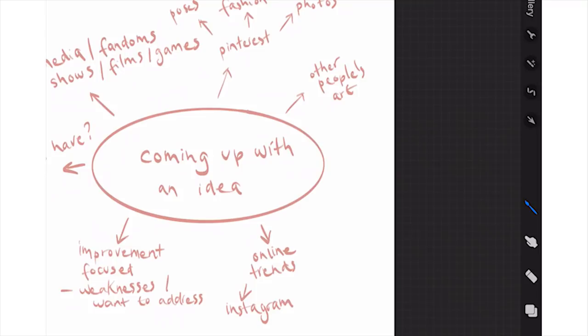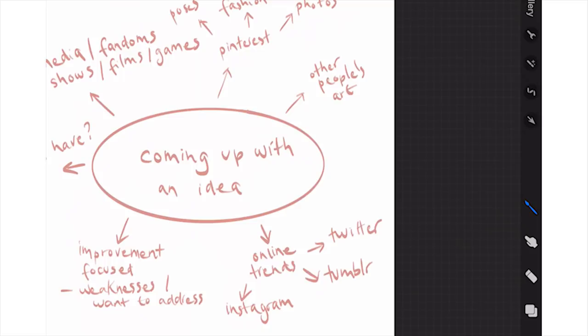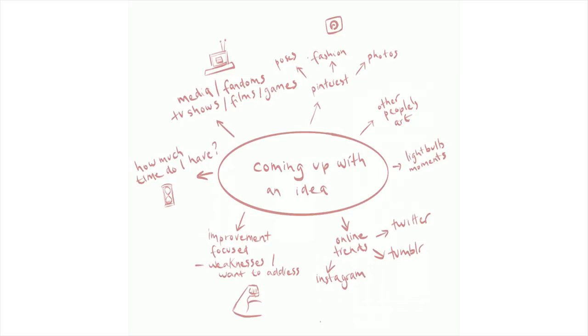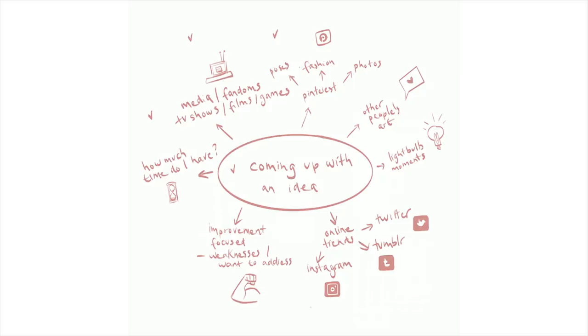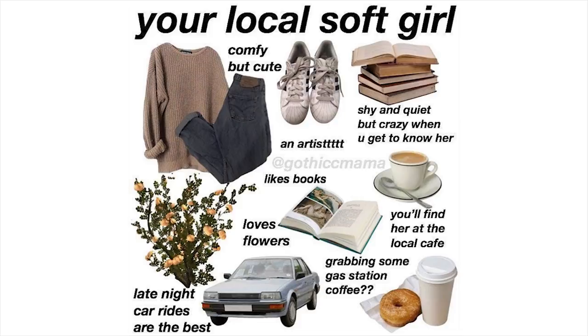Six is trends — often on Instagram and Twitter there'll be art trends going around, for example the 'draw this in your style' challenge or the 'meet the artist' meme. My favorite one is the Gym Sona meme, where everyone drew themselves as Pokémon Gym Leaders. Seven is light bulb moments — these are the rare occasions where I'll just be doing something random and all of a sudden my mind will come up with an idea, and I have to write it down straight away.